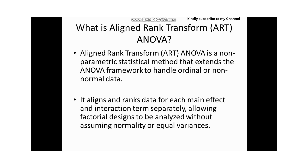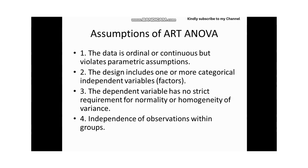What is aligned rank transform ANOVA? The aligned rank transform ANOVA is a non-parametric statistical method that extends the ANOVA framework to handle ordinal or non-normal data. It aligns and ranks data for each main effect and interaction, allowing factorial designs to be analyzed without assuming normality or equal variance.